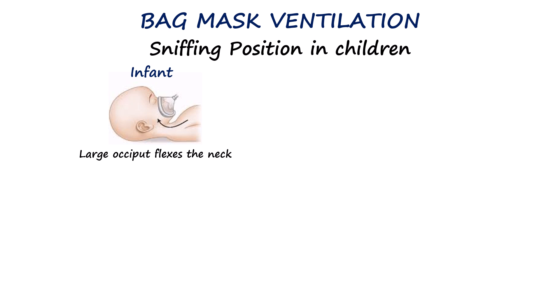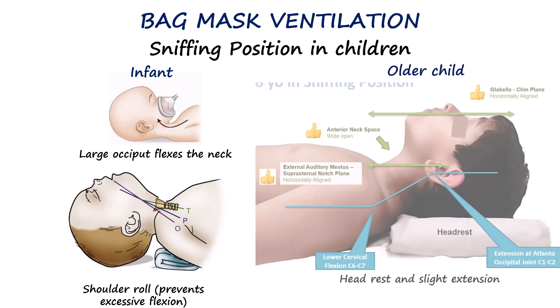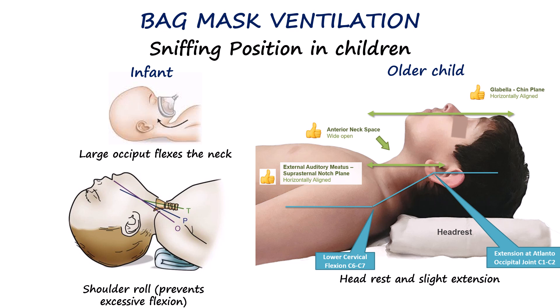For infants, placing a small rolled towel under the shoulders is often more helpful, as it prevents excessive flexion caused by the prominent back of the head. The infant's head should not be fully extended like an adult; instead, it should be tilted back only slightly, as if gently sniffing the air. For older children, the prominence of the occiput decreases, so a headrest or slight ramping under the head may be sufficient to achieve the sniffing position, and head extension is often required.